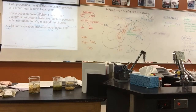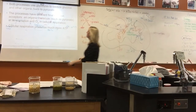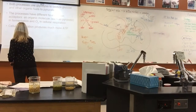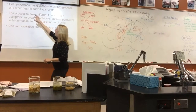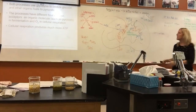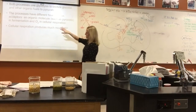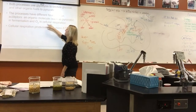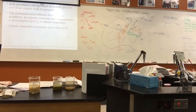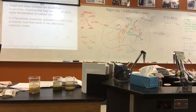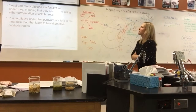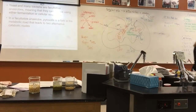Comparing fermentation to cellular respiration: both use glycolysis to oxidize glucose, but they differ in their final electron acceptors. In fermentation the final acceptor is an organic molecule like pyruvate; in cellular respiration it's oxygen. Cellular respiration produces far more ATP. Yeast and many bacteria are facultative anaerobes — they can survive using either fermentation or cellular respiration, with or without oxygen.